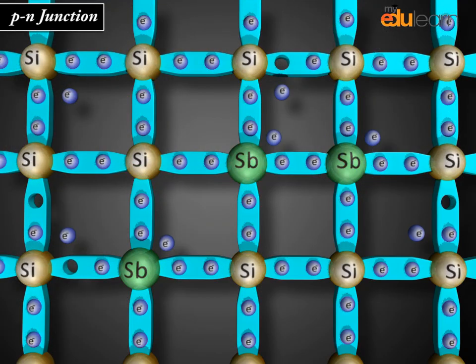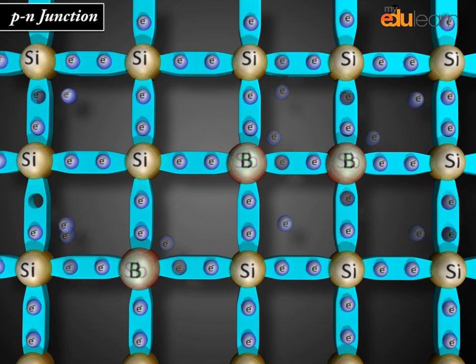We know that in an N-type semiconductor, the concentration of electrons is more compared to the concentration of holes. Similarly, in a P-type semiconductor, the concentration of holes is more than the concentration of electrons.